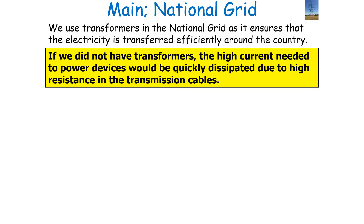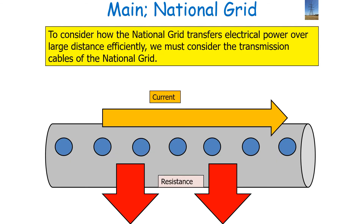If we did not have transformers, the high current needed to power devices in our modern world would be quickly dissipated due to the high resistance in transmission cables. To consider how the national grid transfers electrical power over a large distance efficiently, we have to consider the transmission cables of the national grid.